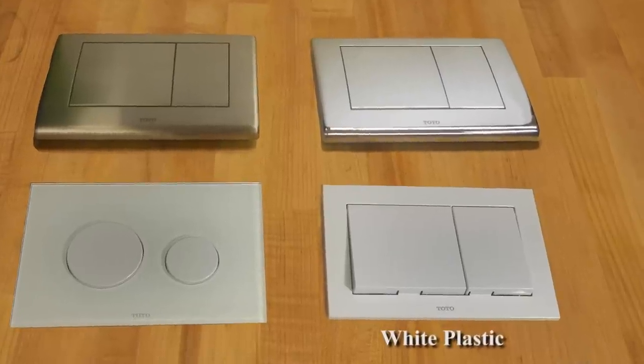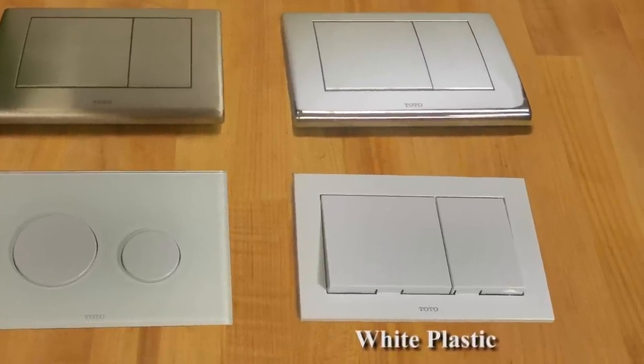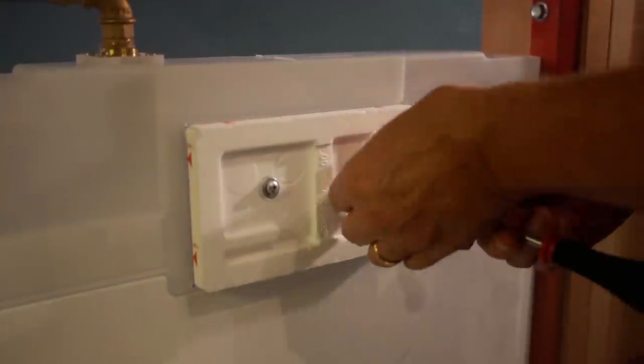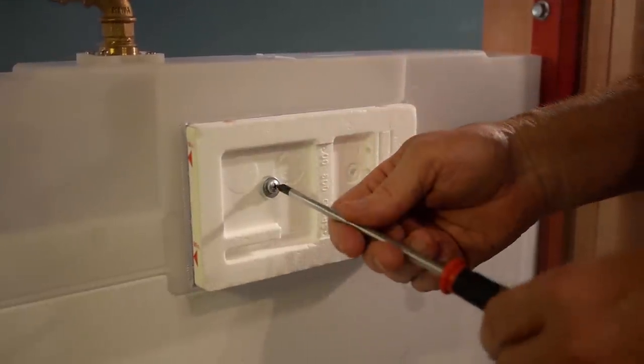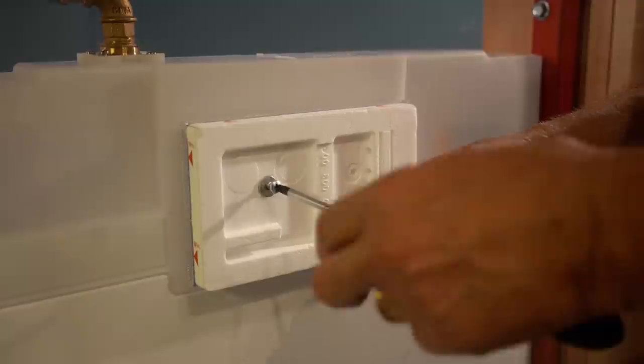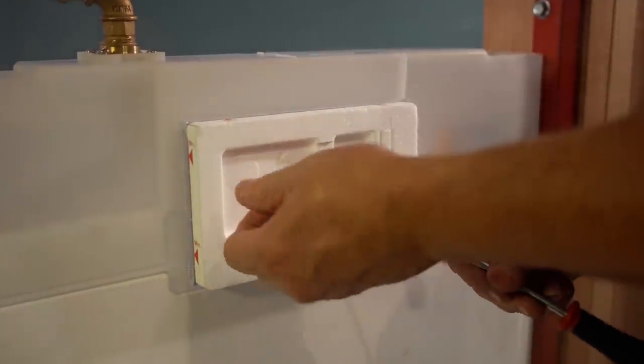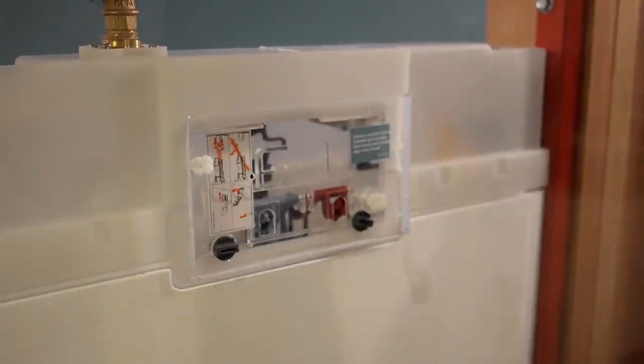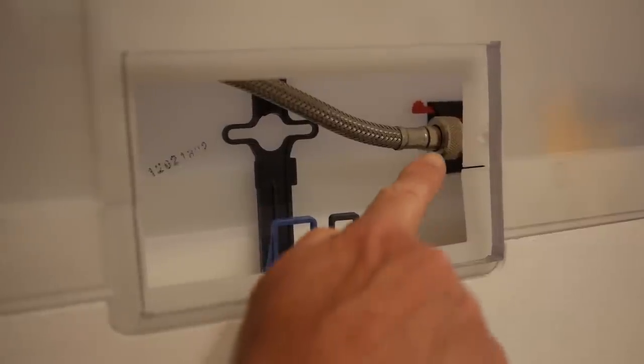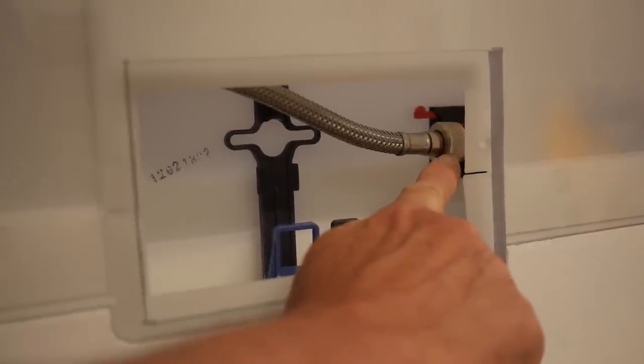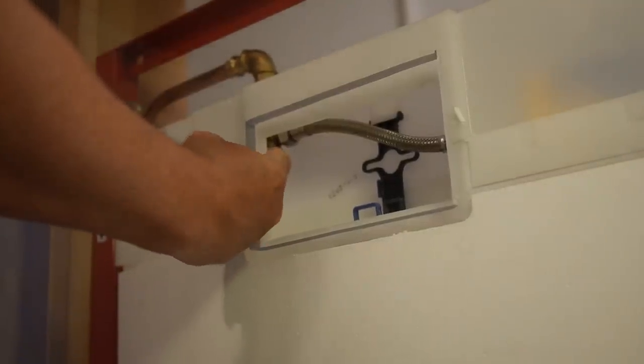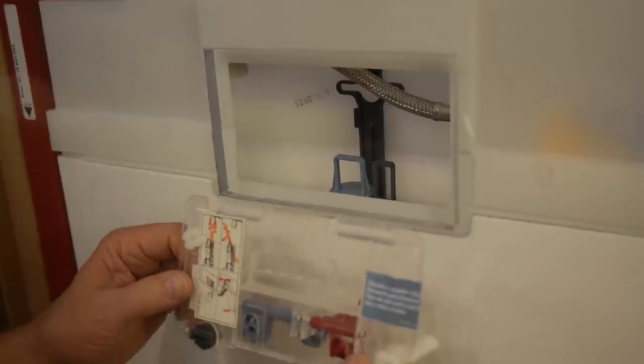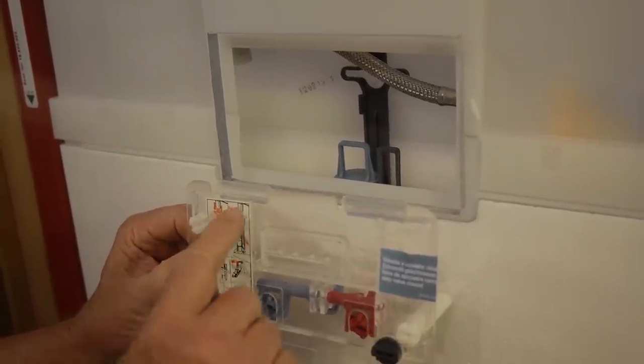We have chosen to install the white plastic plate but each style will be a little bit different. The first thing to do is to remove the styrofoam plaster ground from the opening and save the two screws for later. Check inside the opening and make sure that the water supply line is connected to the shutoff valve and to the fill valve. Open the valve and fill the tank.